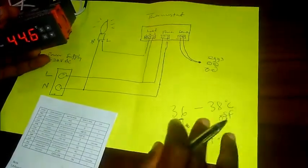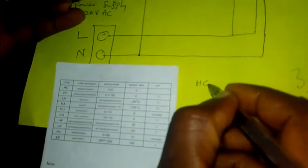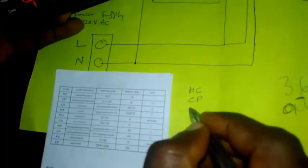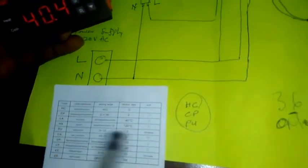First, let me tell you the three very important parameters to change. You should change your HC, you should change your CP, and then very importantly, you should change your PU. These are the three very important things you have to change on the thermostat.